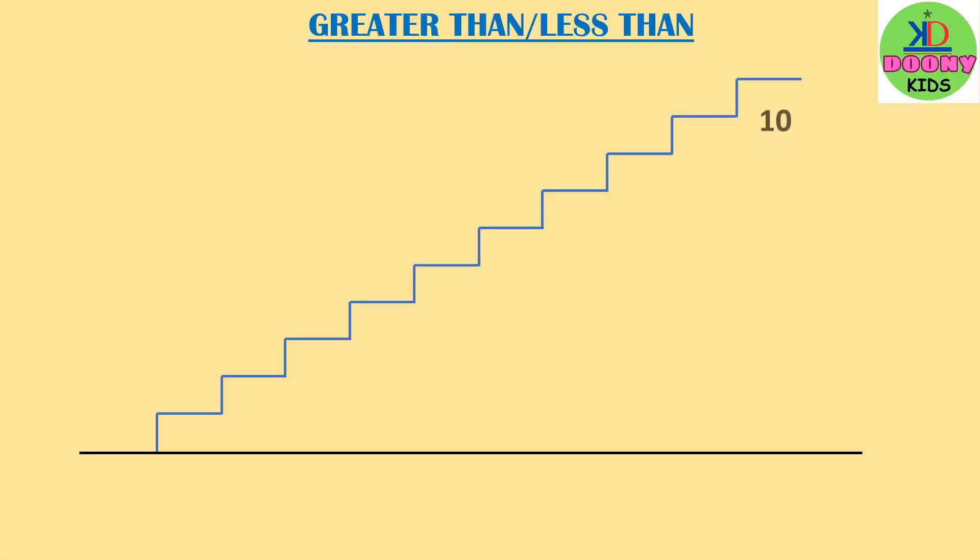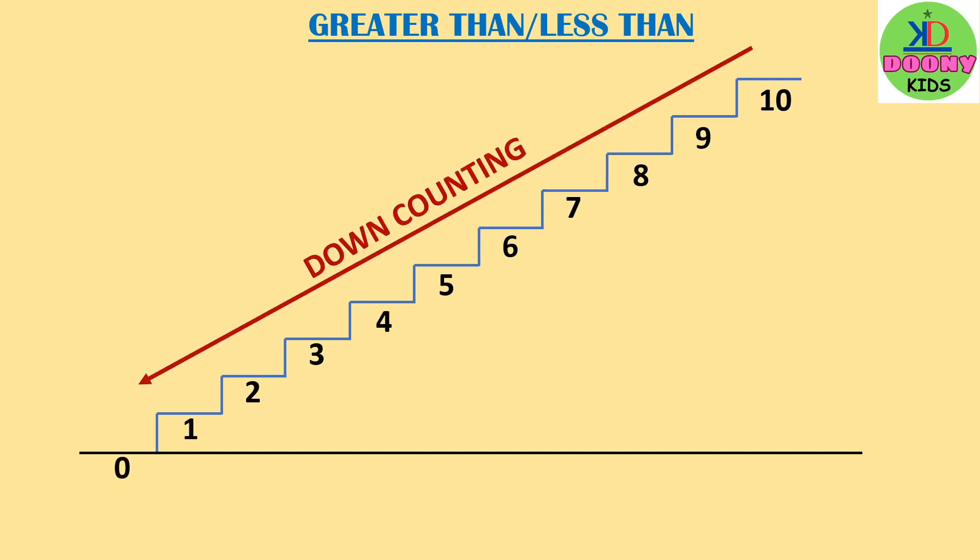Now, 10, 9, 8, 7, 6, 5, 4, 3. 10, 9, 8, 7, 6, 5, 4, 3, 2, 1, 0. This is called down counting.